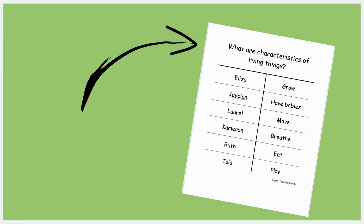Before starting the activity, you will need to write the activity question — What are characteristics of living things? — at the top of your documentation panel.